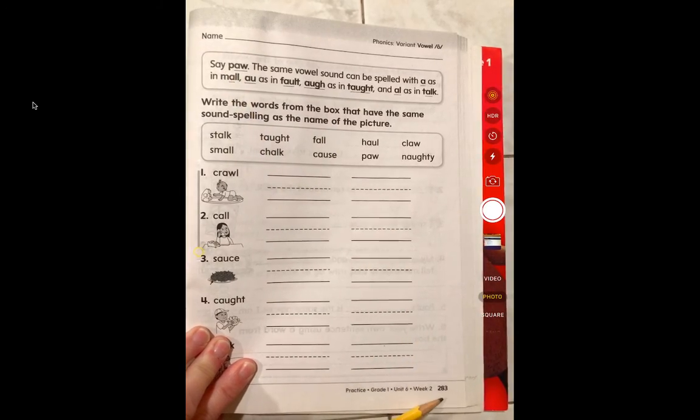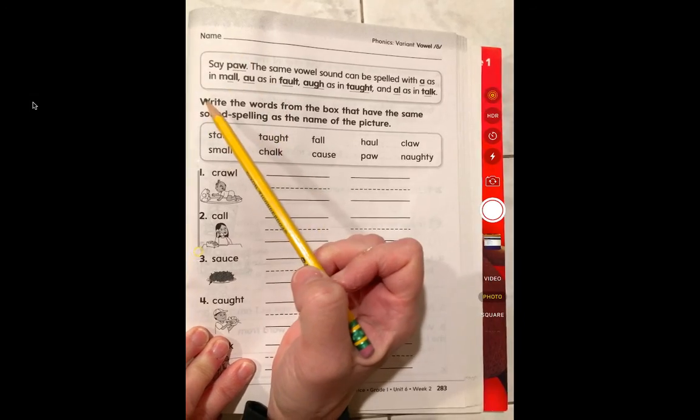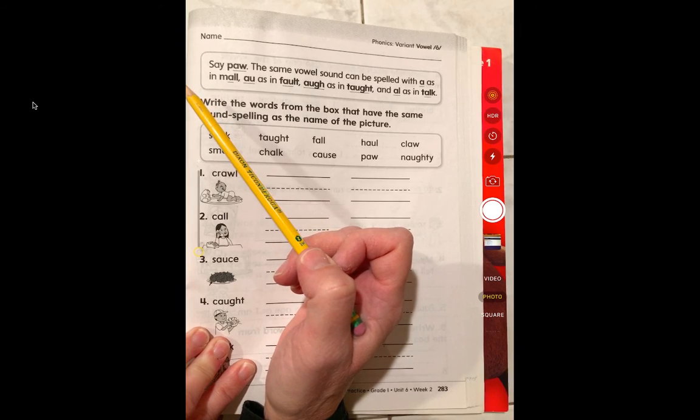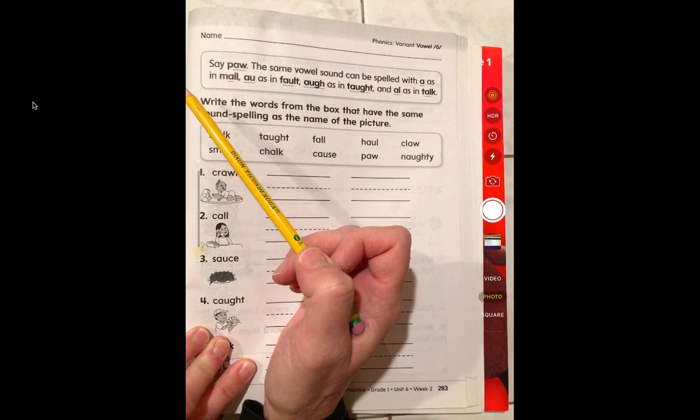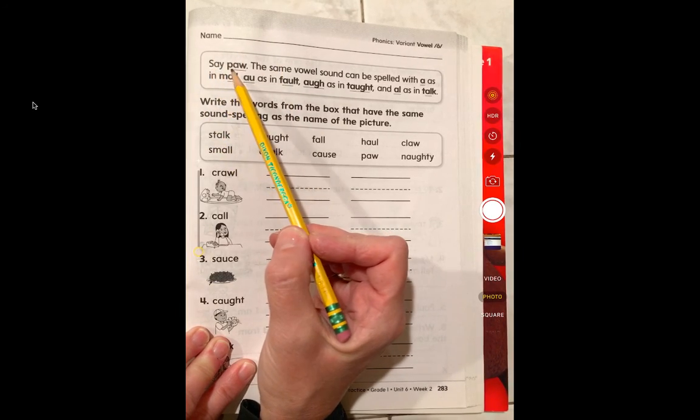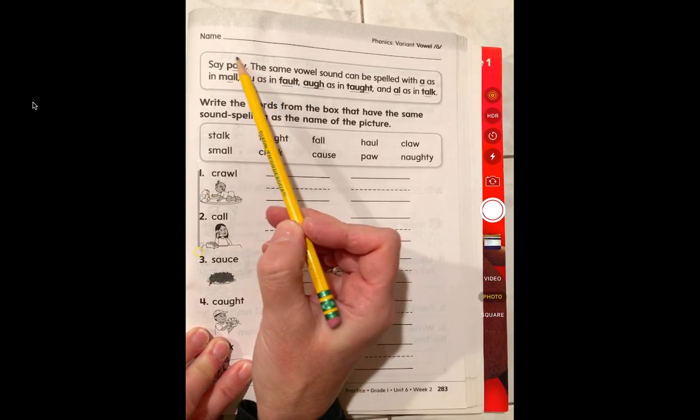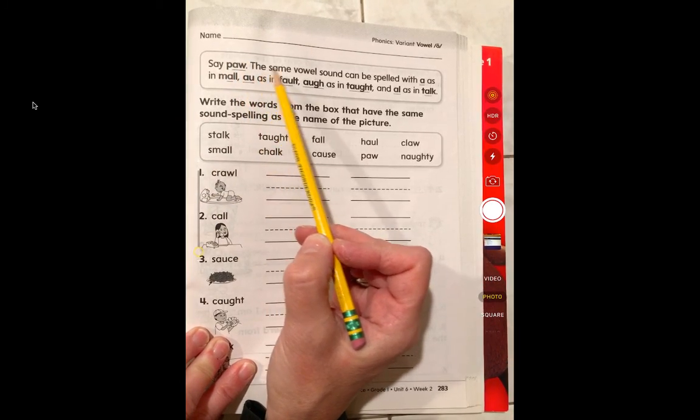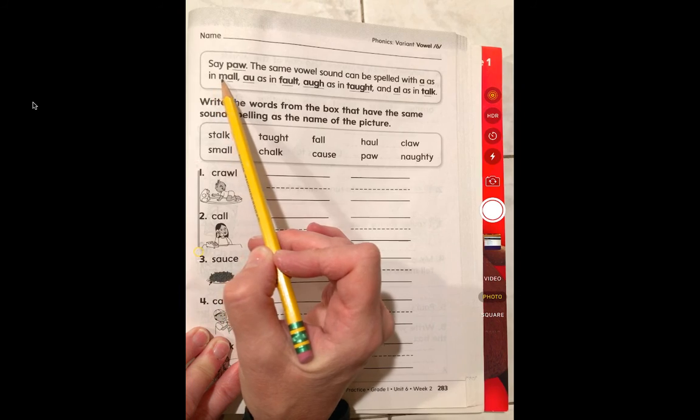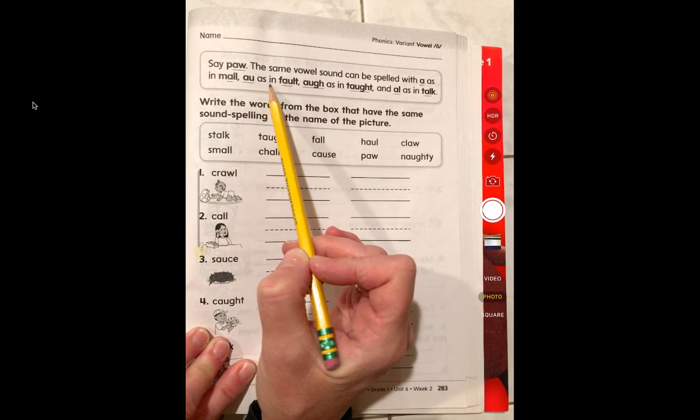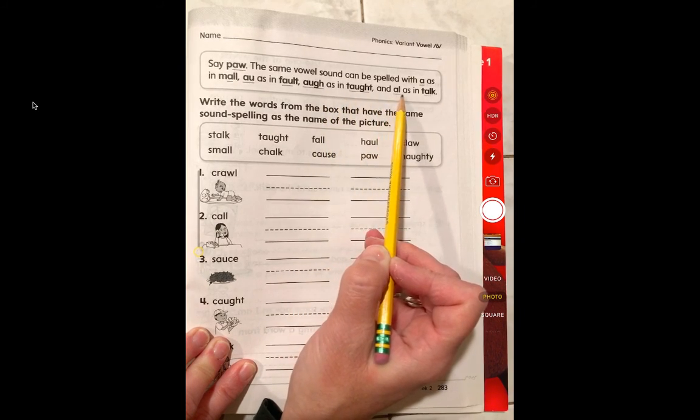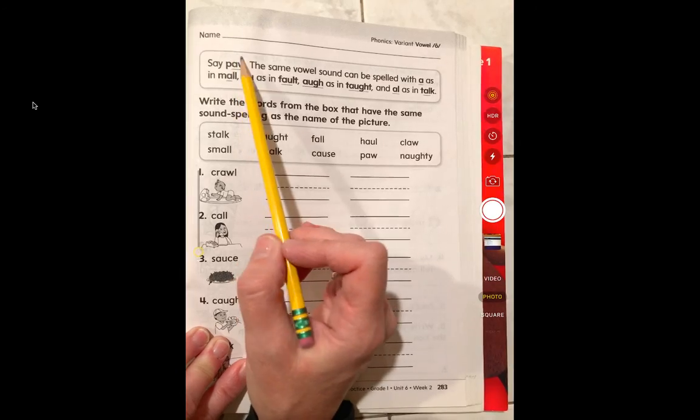So on page 283 we're doing a sound, and you can think of these like what we would do in SIPS or when we'd be looking for word families or letters that make sounds together. So say the word paw, and this is spelled like a dog's paw. It says the same vowel sound can be spelled with A as in mall, A-U as in fault, A-U-G-H as in taught, and A-L as in talk. So that aw sound.